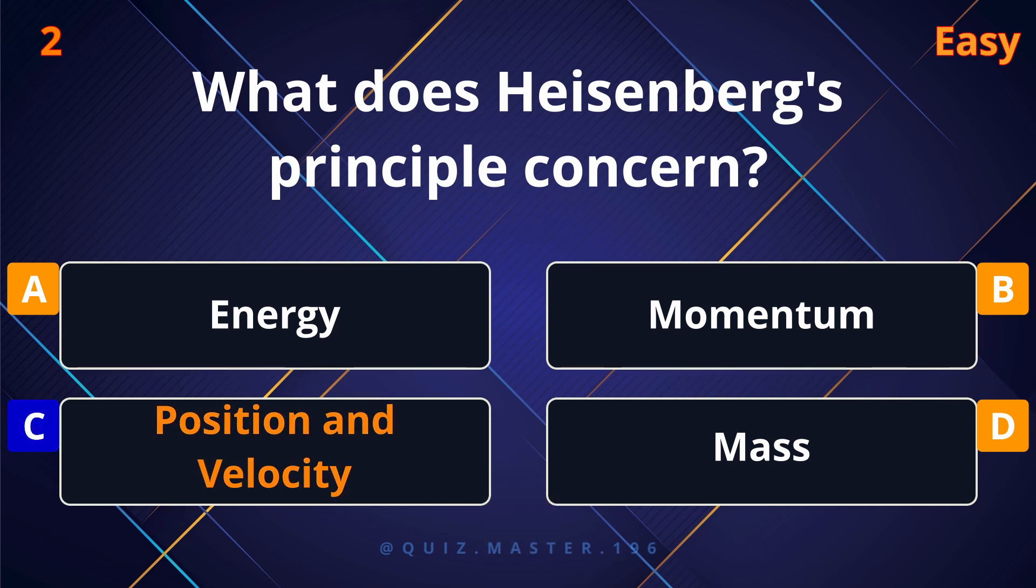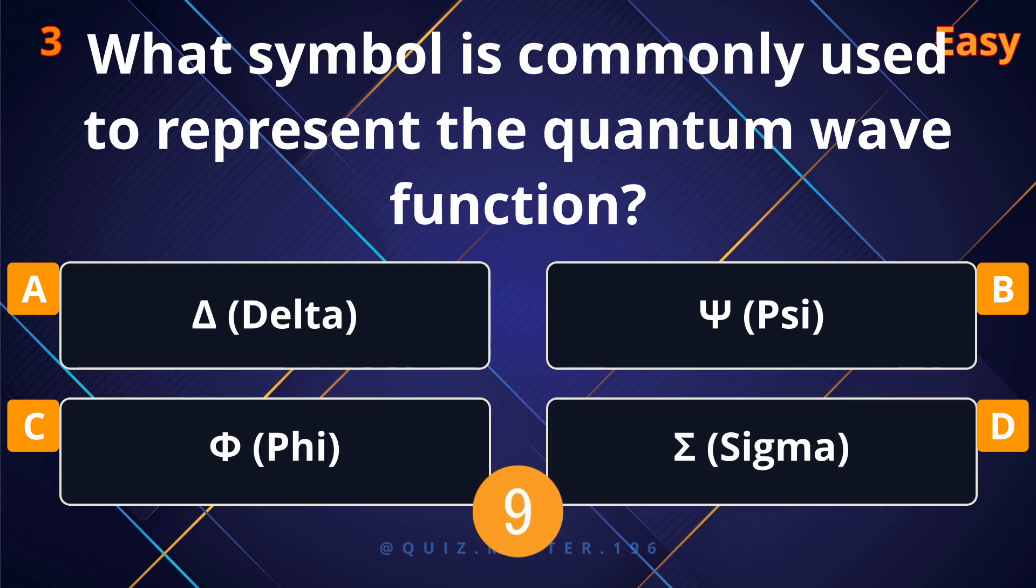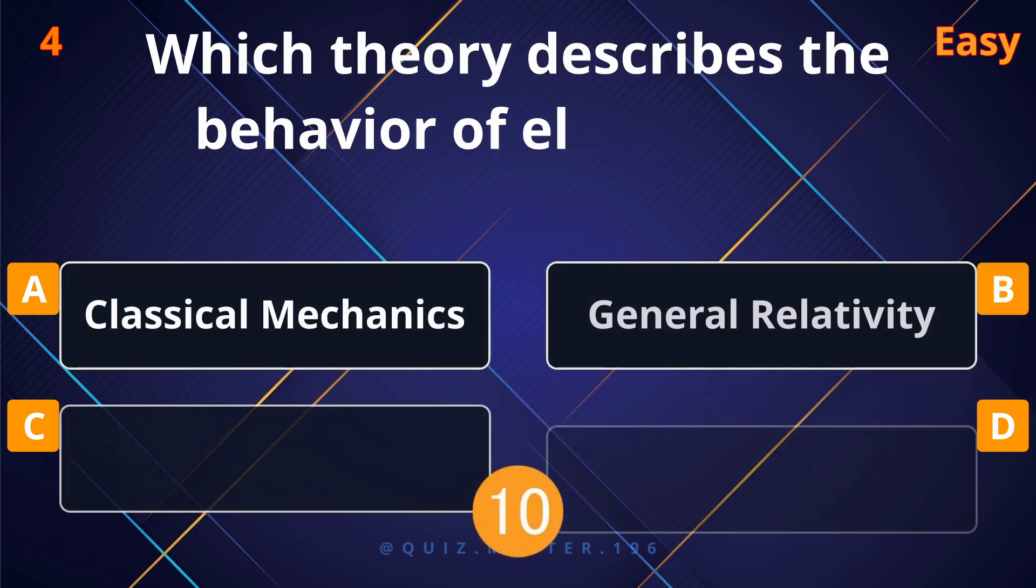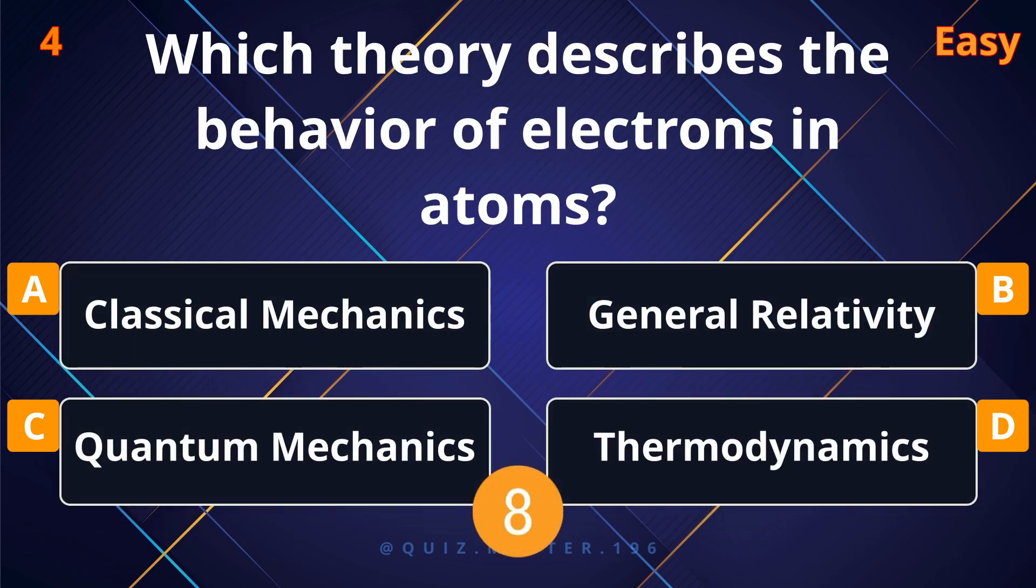What does Heisenberg's principle concern? Position and velocity. What symbol is commonly used to represent the quantum wave function? Psi.